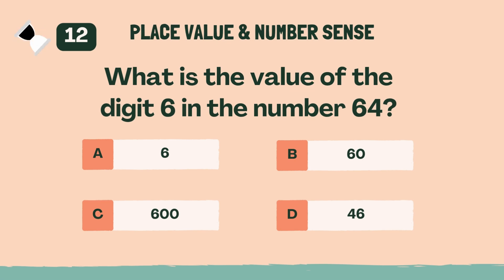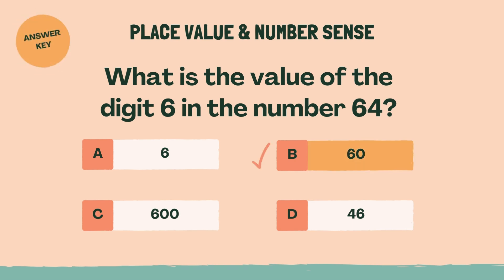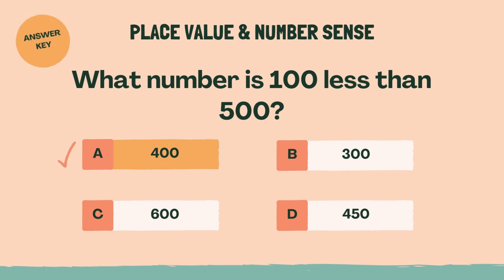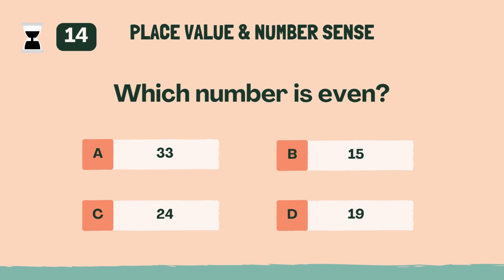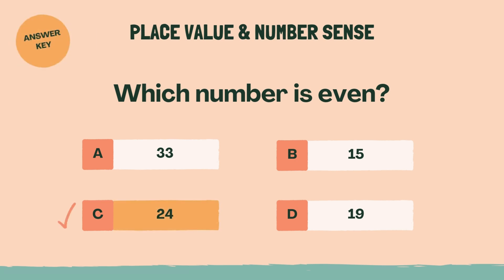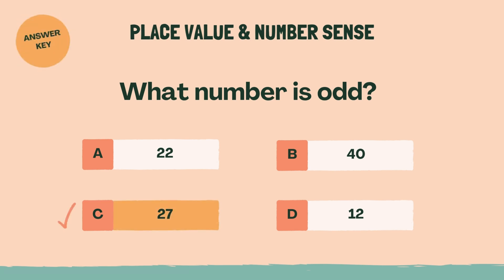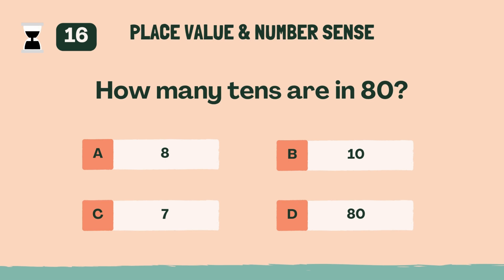What is the value of the digit 6 in the number 64? B, 60. What number is 100 less than 500? A, 400. Which number is even? C, 24. What number is odd? C, 27. How many tens are in 80? A, 8.